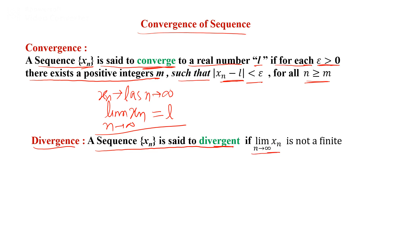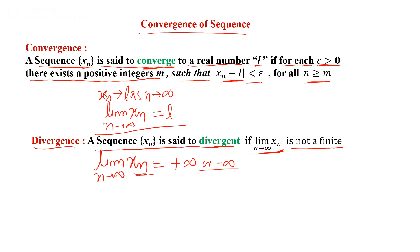A sequence {xn} is said to be divergent if the limit as n tends to infinity of xn is not finite — that is, the limit equals plus infinity or minus infinity. Here, xn represents the nth term of the sequence.